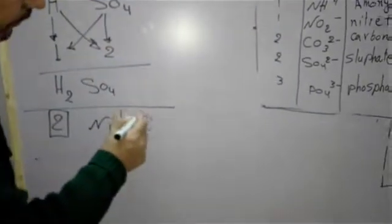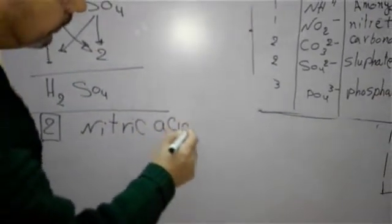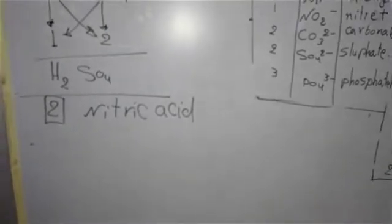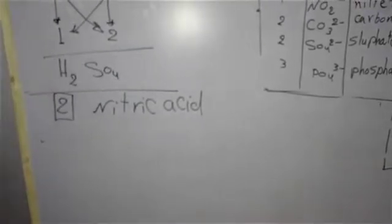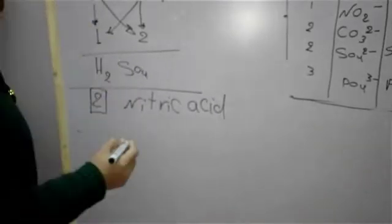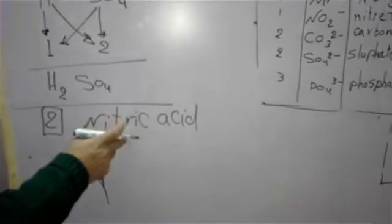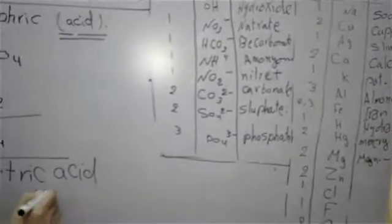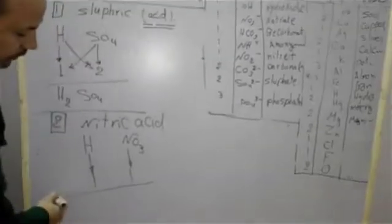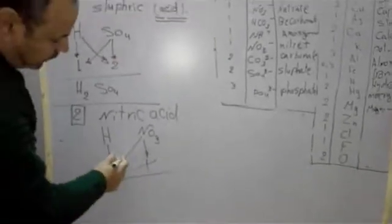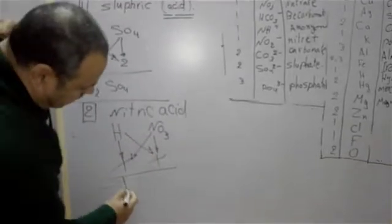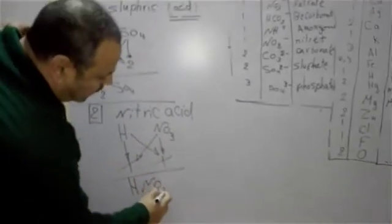Nitric acid. Nitric acid will write hydrogen, its balancing, and nitrate NO3, its balancing 1. 1 by 1. There is HNO3.